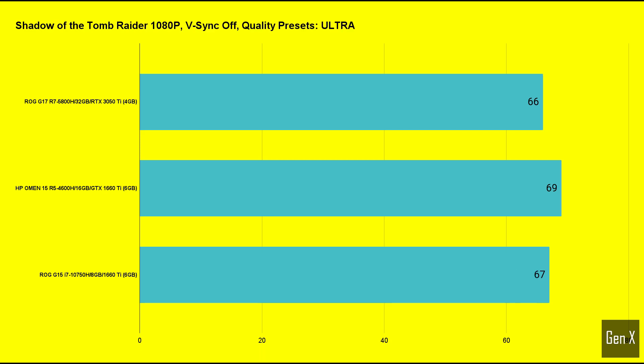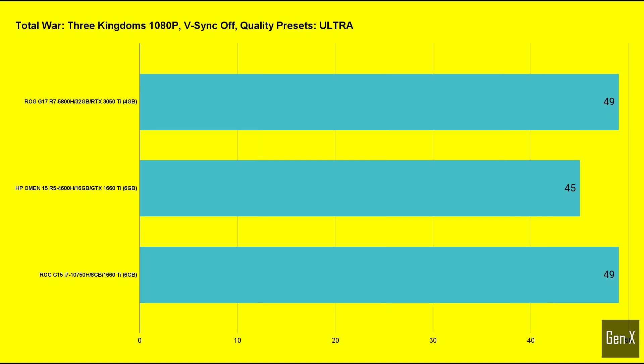Shadow of the Tomb Raider was tested using Ultra settings. This game can be very heavy on the graphics and can use more than 6 gigabytes of video RAM. Here we start to observe a very interesting change — the RTX 3050 Ti received 66 FPS in the benchmark test, and it is beaten by the 1660 Ti with 6 gigabytes of dedicated video RAM. Total War: Three Kingdoms was tested at Ultra settings. The RTX 3050 Ti scored 49 FPS in the benchmarks, the HP Omen 15 received 45 FPS, and the ROG Strix G15 with an Intel CPU scored 49 FPS.